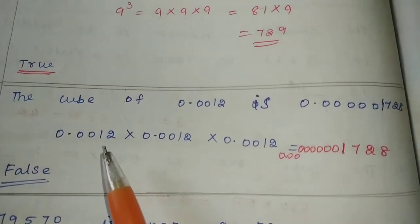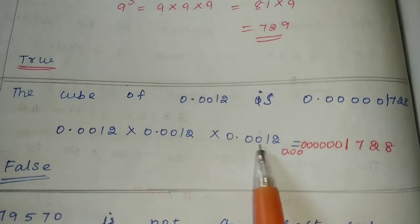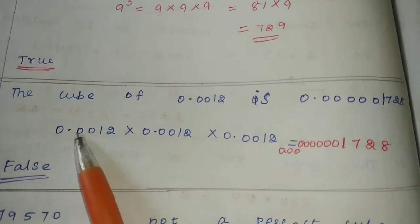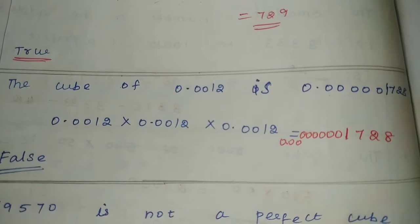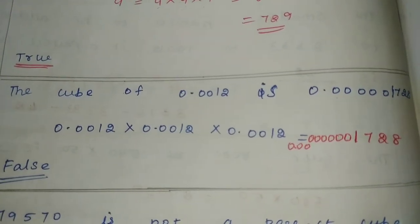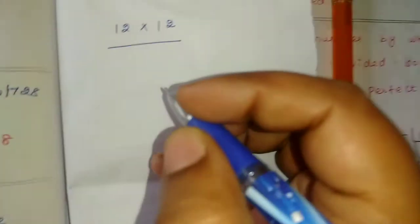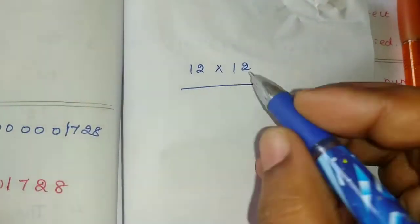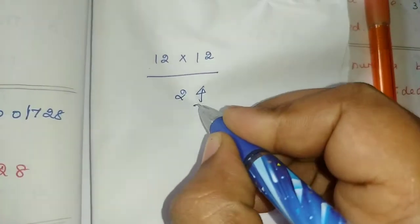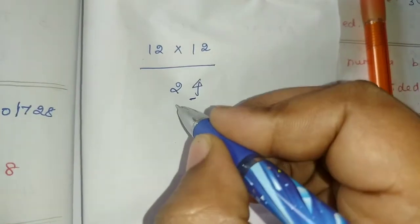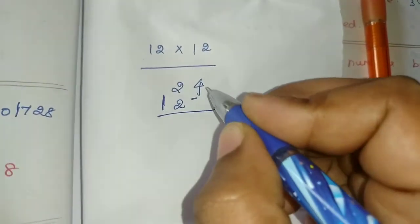First, look at the numbers: multiply them out and count the zeros. You have to know the count of decimal places carefully — check if the number of zeros is correct.